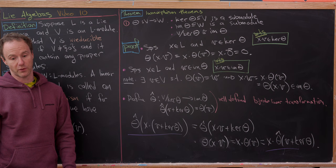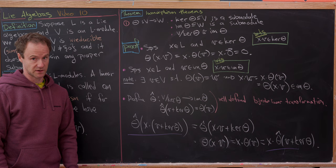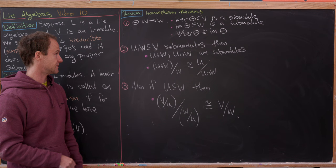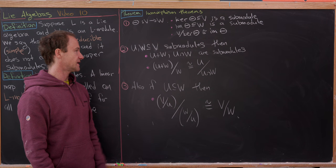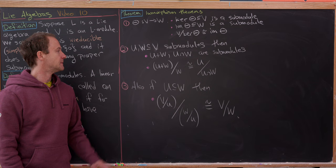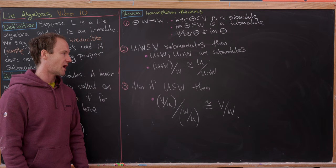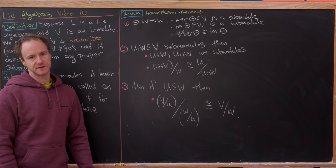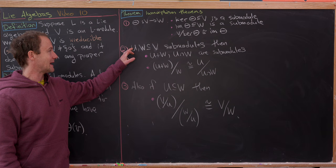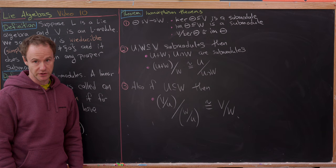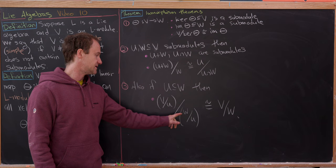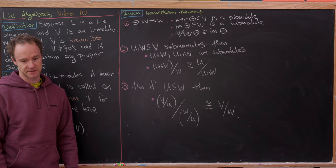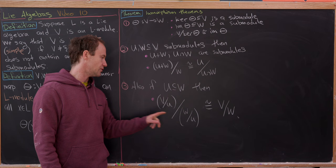The second and third isomorphism theorems will be left as exercises. The second: if U and W are submodules of V, then U+W and U∩W are submodules, and (U+W)/W ≅ U/(U∩W). The third: if additionally U is a submodule of W, then (V/U)/(W/U) ≅ V/W. Note that W/U being a submodule of V/U must also be verified.